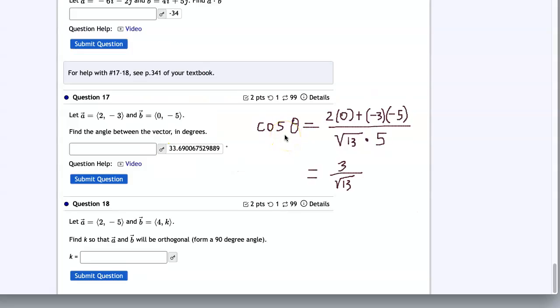Set up this geometric interpretation of dot product formula that the cosine of theta is equal to the dot product of the two vectors divided by the product of their magnitudes. And then we take inverse cosine of 3 divided by root 13. And we end up with the angle between the two vectors is 33.69 degrees.